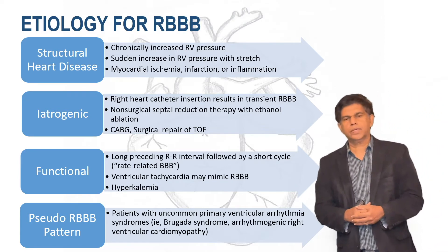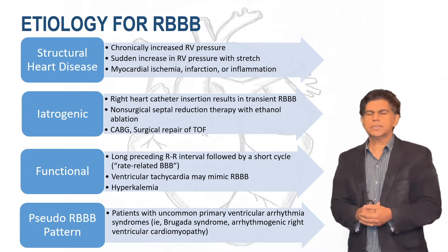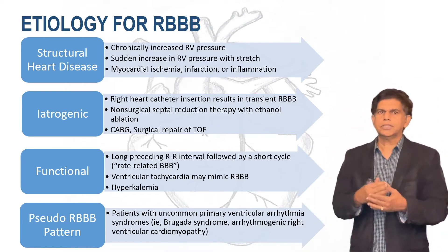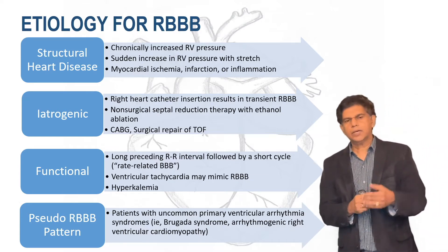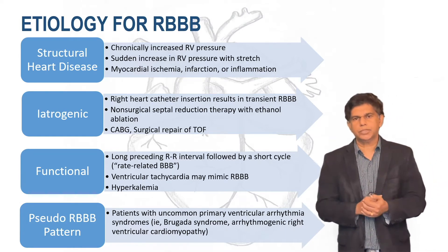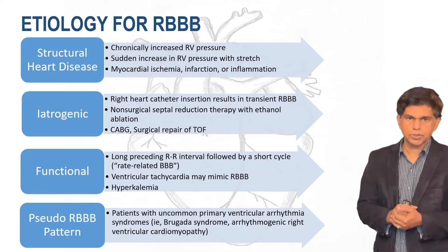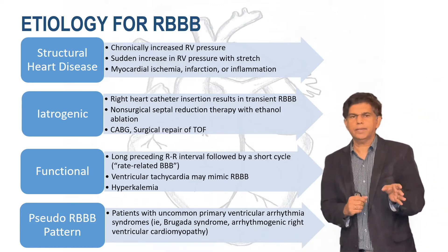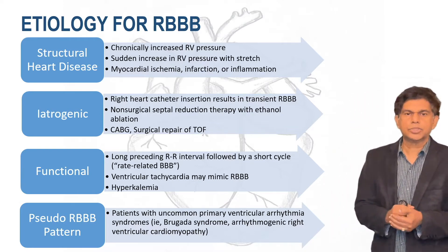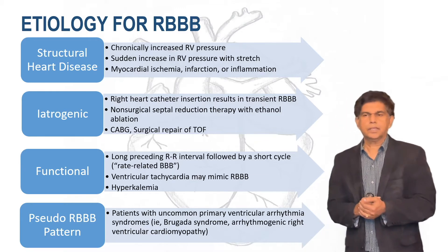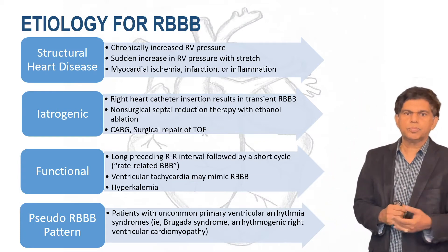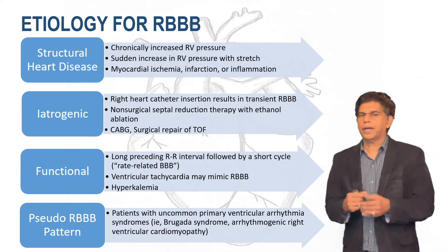Let's look at what causes right bundle branch block. Anything related to structural heart disease can be a cause — such as a sudden increase in right ventricular pressure, myocardial ischemia, coronary artery disease, infarction, inflammation, and ventricular hypertrophy. Regarding iatrogenic causes, the most common is a transient right bundle branch block from right heart catheterization. It can also occur with CABG surgery. In children, congenital heart disease repaired surgically — especially tetralogy of Fallot — can cause it, as can septal reduction via ethanol ablation. Functional long-preceding RR interval followed by a short cycle and ventricular tachycardia can mimic right bundle branch block, as can hyperkalemia.